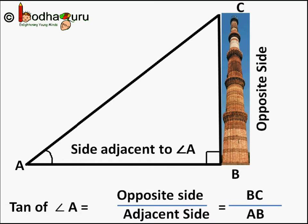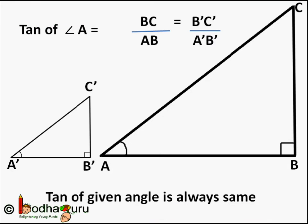The value of tan of A is fixed for a given angle. So say the angle A is 30 degrees. The tangent of angle 30 degrees is a fixed value, 1 by square root of 3.